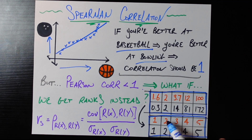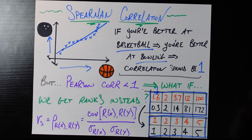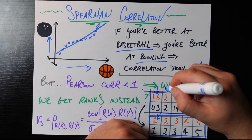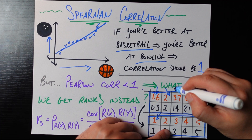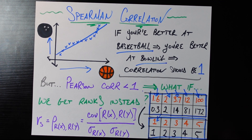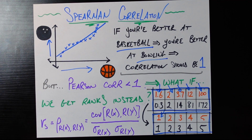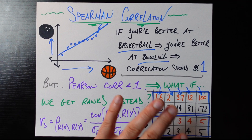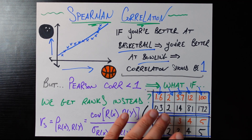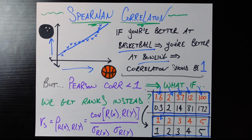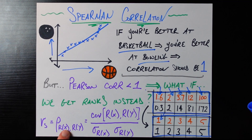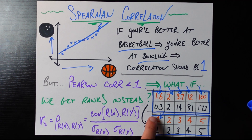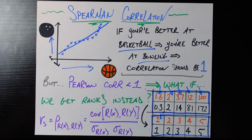The ranks on the basketball axis go one, two, three, four, five — the person with the lowest basketball score gets rank one, counting upward from there through fifth place. We do the exact same thing for bowling. Then, to get the Spearman correlation, we revert back to the Pearson correlation definition — which is part of why this metric is great. You don't need to learn anything new; just transform your raw data into ranks of each variable, represented as r of x and r of y, and compute a standard Pearson correlation using those ranks.